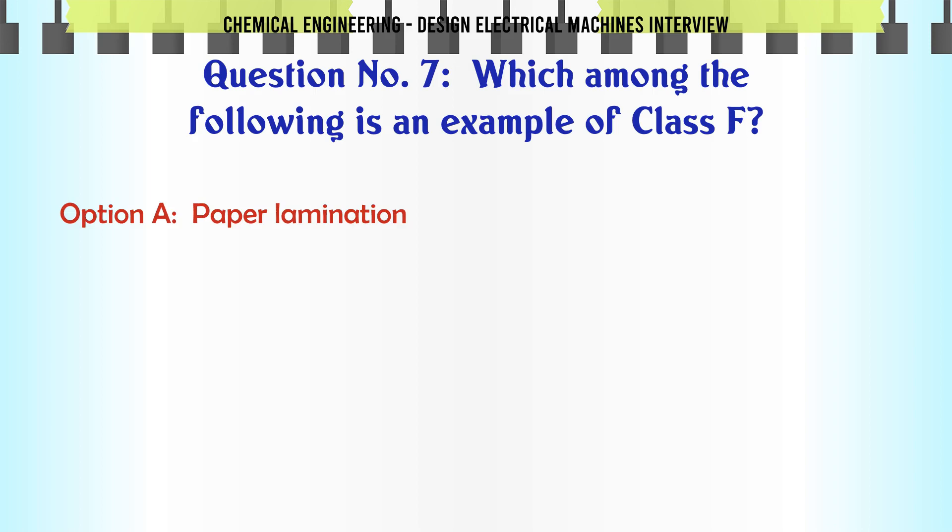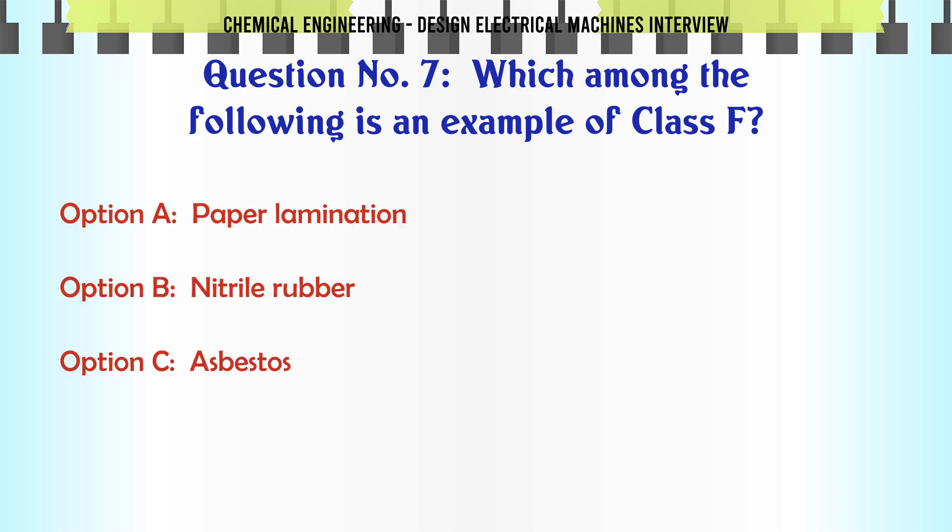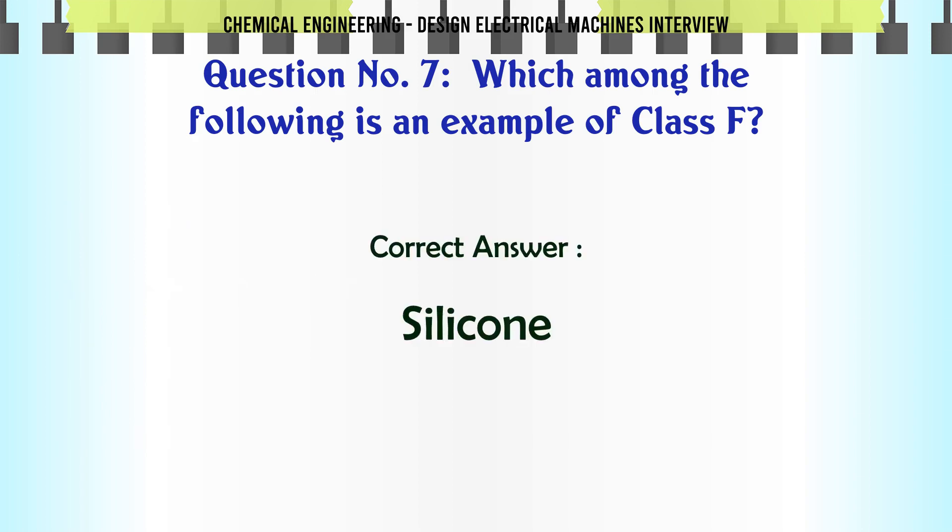Which among the following is an example of class F? A: paper lamination, B: nitrile rubber, C: asbestos. The correct answer is silicon.